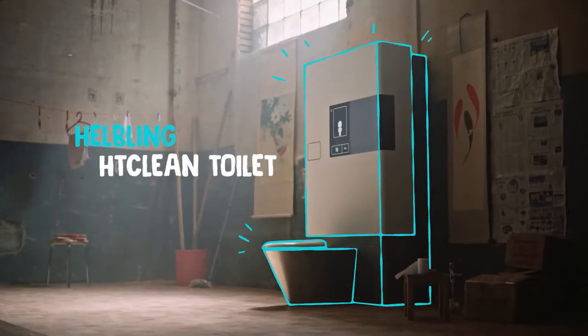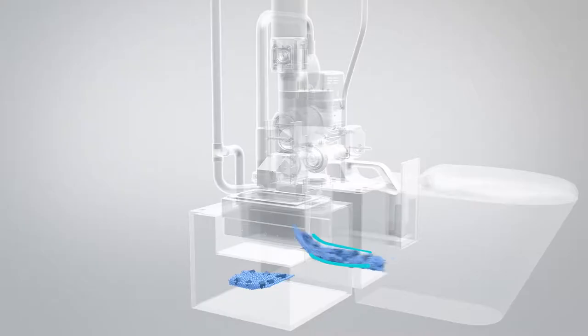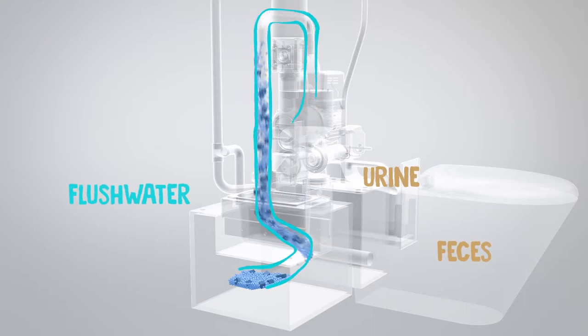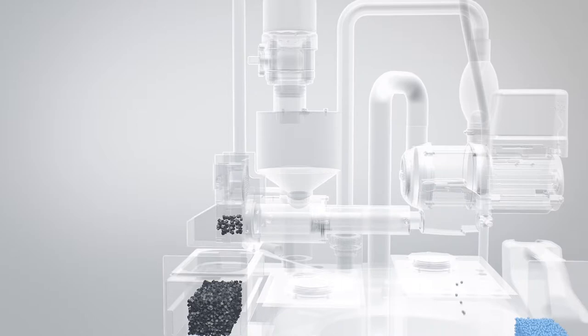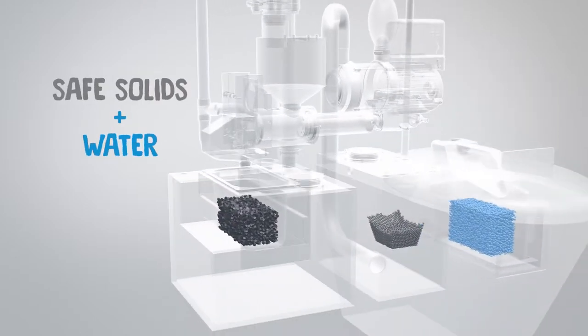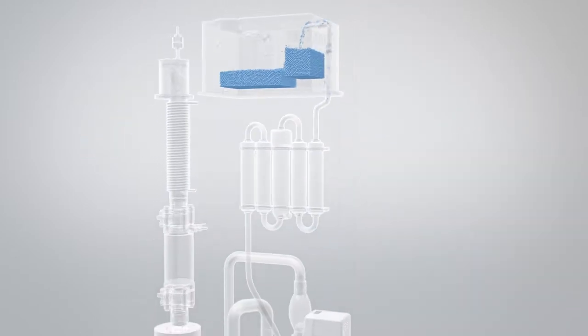Helbling's HT Clean toilet processes the flush water, urine, and feces together using combined pressure and heat like a pressure cooker, resulting in a mixture of safe solids and water. The water is filtered for reuse for flushing.